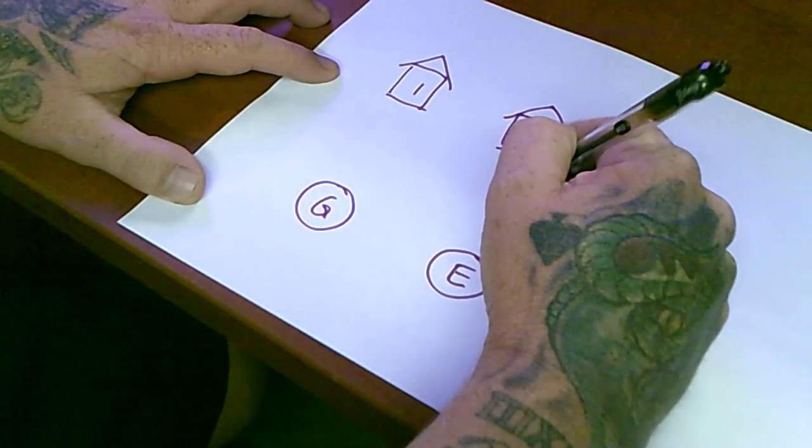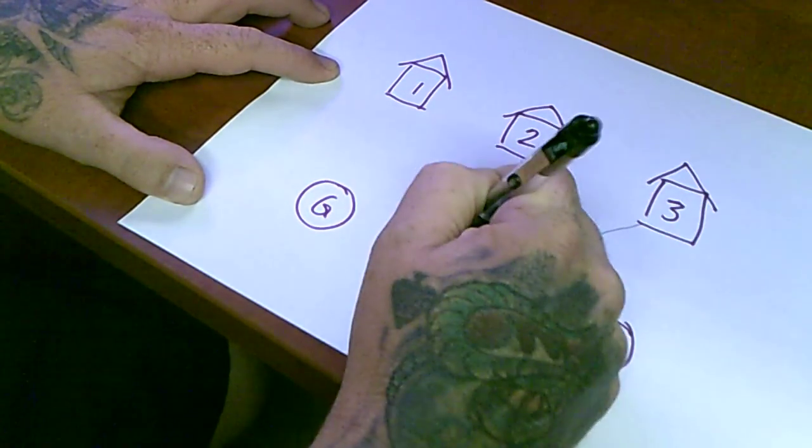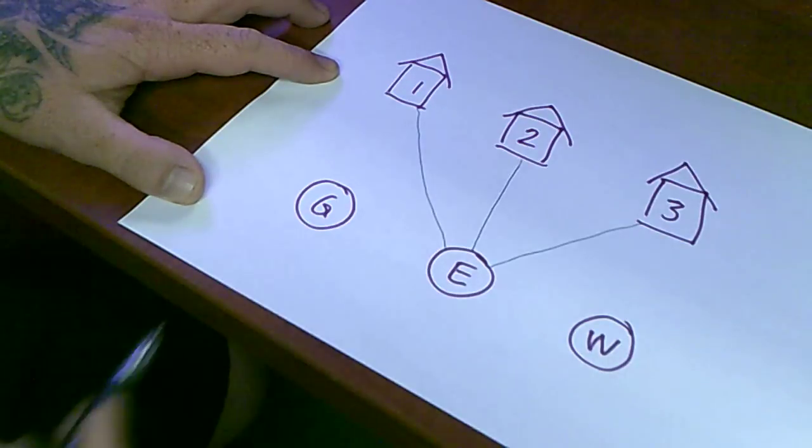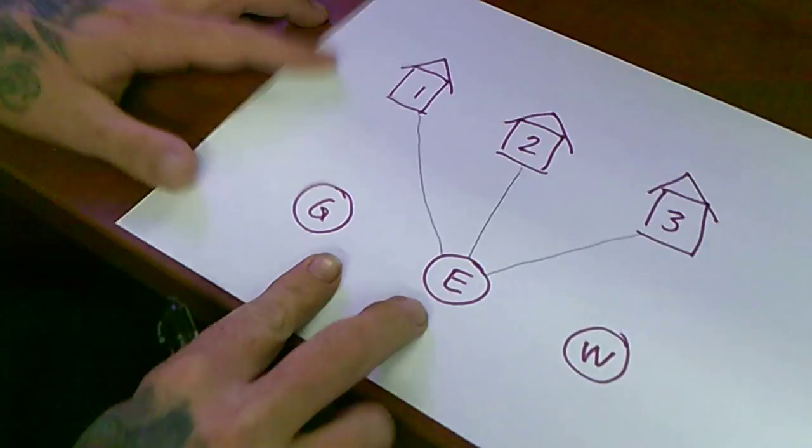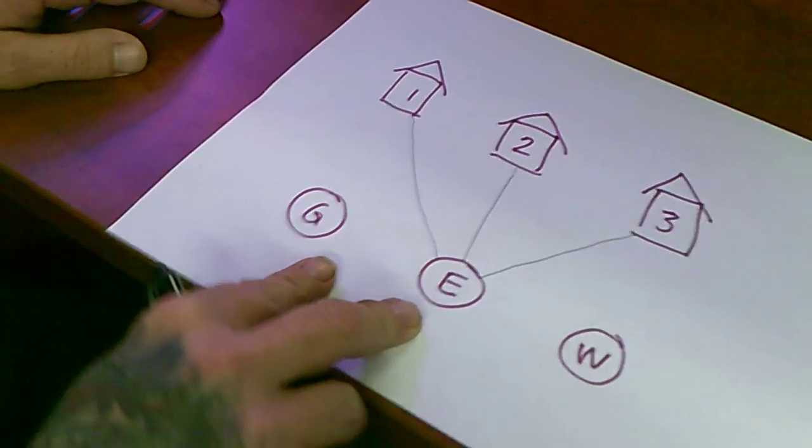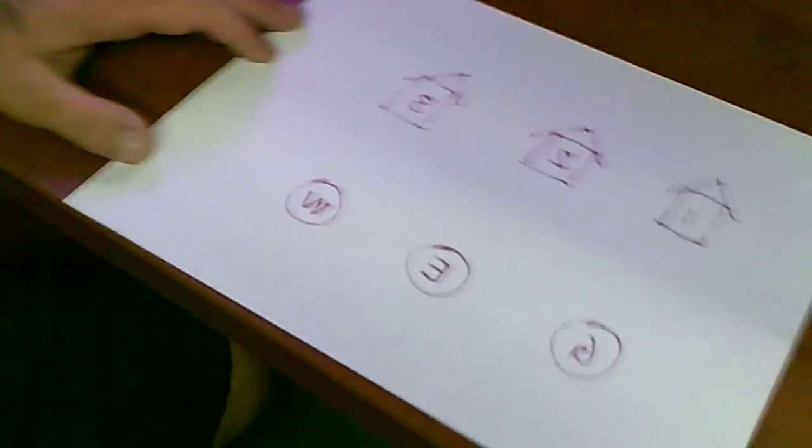So you have electricity running to all homes above ground. Gas and water usually run underground. So here's the solution to the problem: you can use the entire sheet of paper. Flip it over.